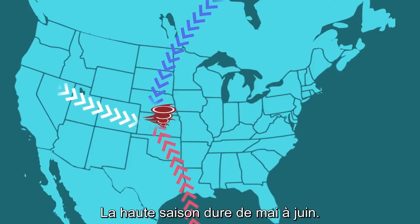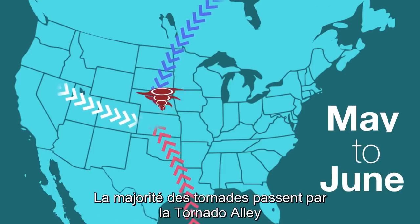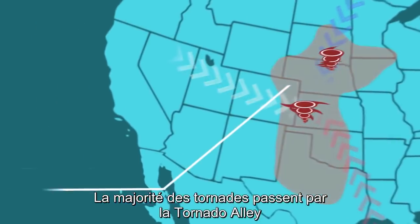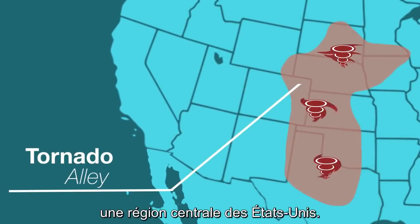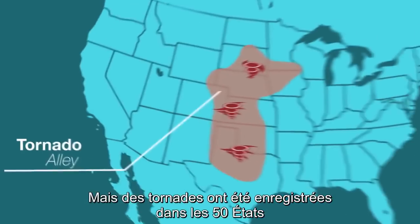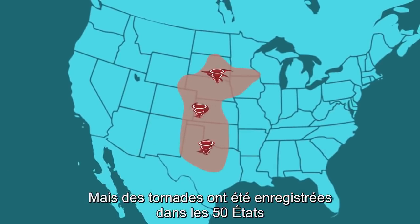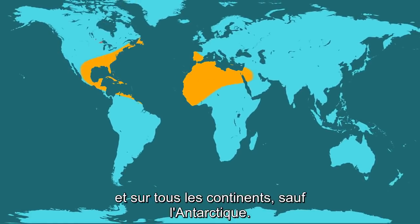Nearly three-quarters of the world's tornadoes occur in the United States, and the peak season is between May and June. A majority touch down in Tornado Alley, a section of the central United States, but tornadoes have been recorded in all 50 states and on every continent except Antarctica.